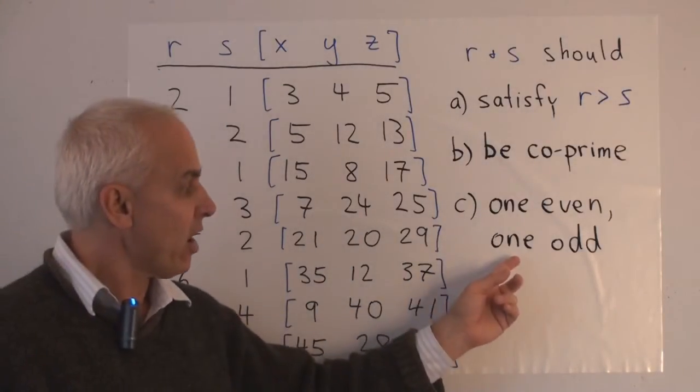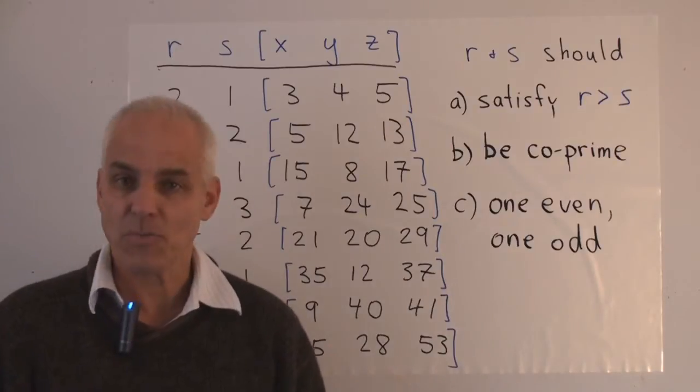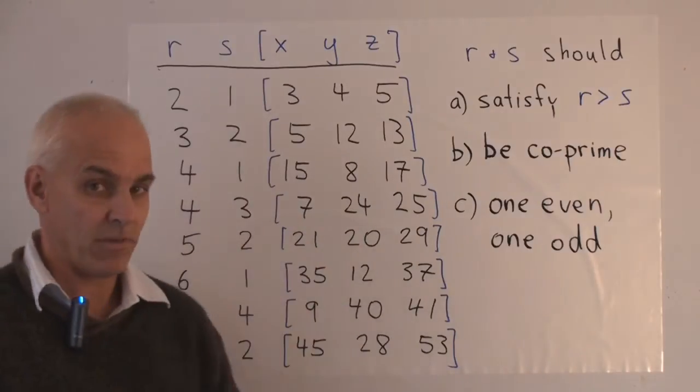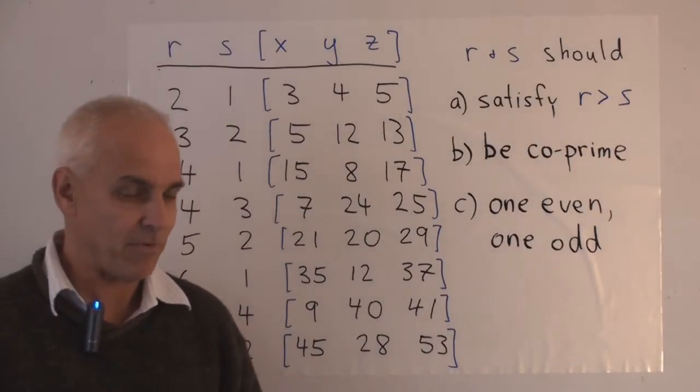And finally, one of r and s should be even and the other one should be odd. Because if they're both even, then both x, y, and z are all going to be even, which is no good because then they can't be reduced.